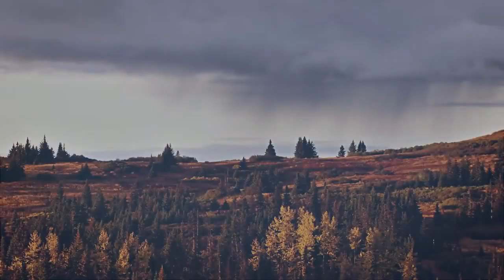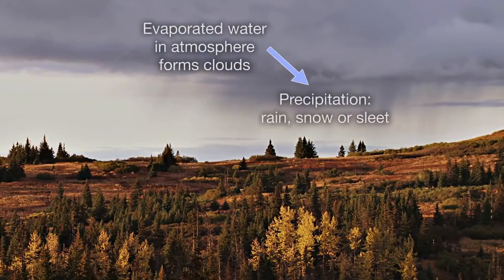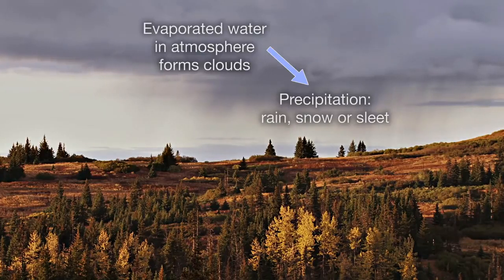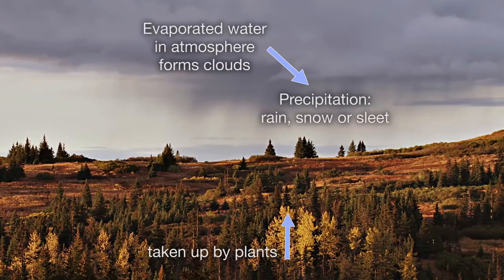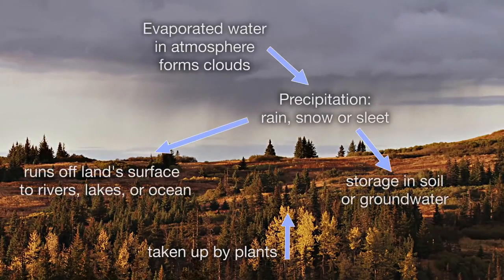Evaporated water in the atmosphere condenses into clouds. Water returns to the Earth as precipitation — for example, rain and snow. Precipitation falling on land is taken up by plants, runs off along the land's surface, or percolates into the soil and enters the groundwater.